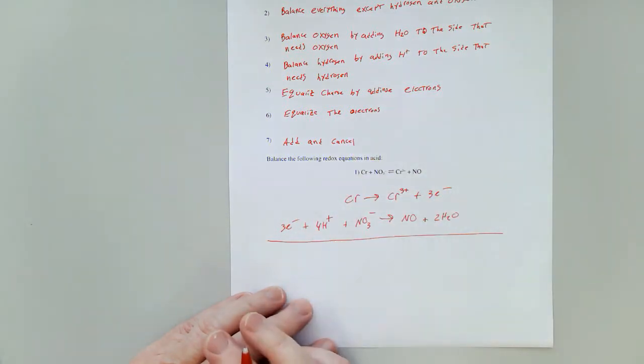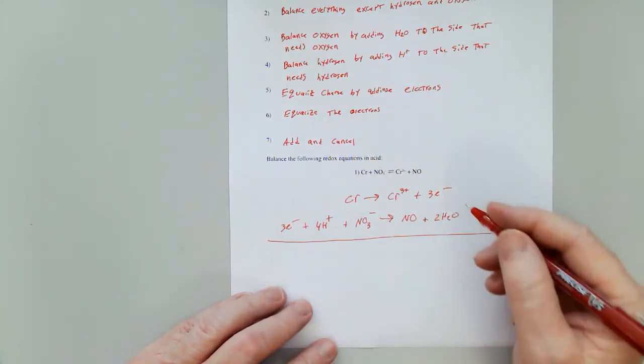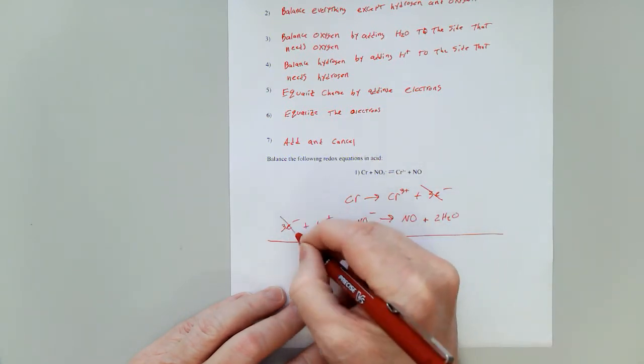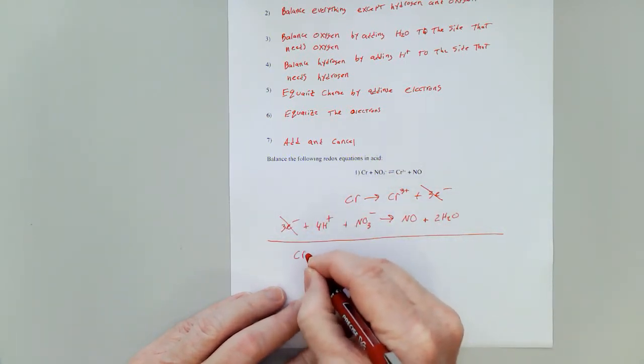Now, equalize the electrons. Well, there's three and there's three. So that's already been done. So all I have to do is cancel those electrons and add everything together.